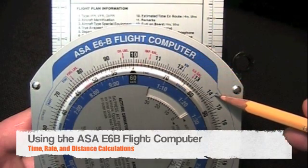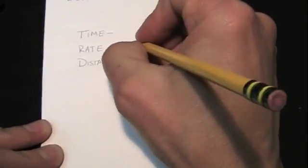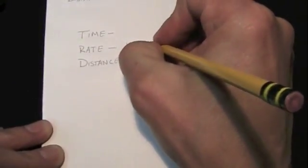Time, rate and distance calculations are easily performed with the E6B flight computer. Let's take a look at calculating time with the predetermined rate and distance.